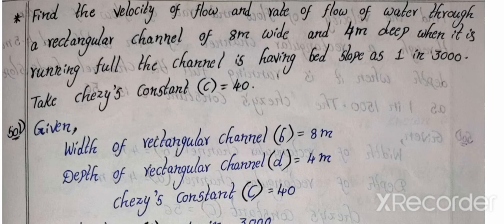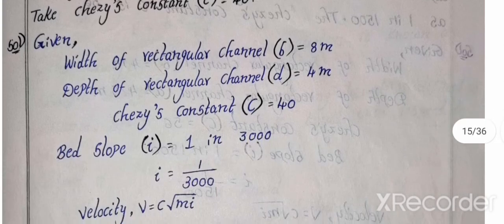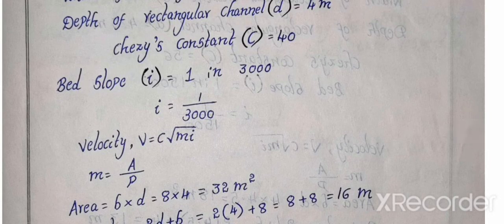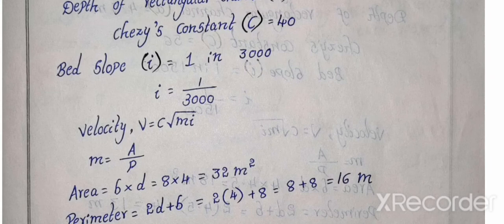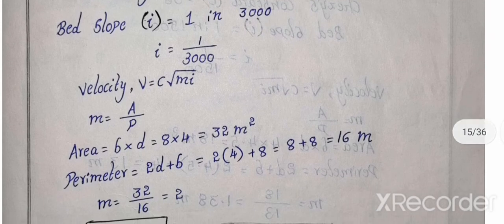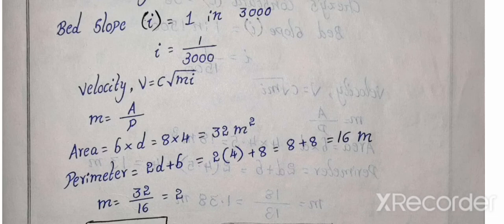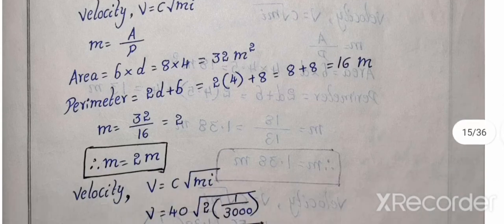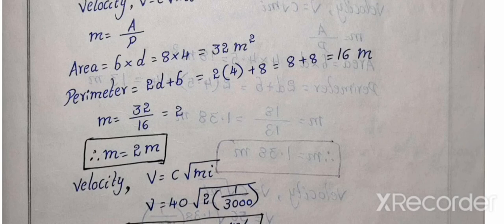When it is running full, the channel is having bed slope as 1 in 3000. So slope i equal to 1 in 3000. Take Chezy's constant C 40. Data: width 8 meters, depth 4 meters, constant C 40, i 1 in 3000. Velocity calculation, velocity equal to C root Mi. So see they have given, M value calculation, A by P. A is B into D. B value 8, D value 4, 32 meters square. Perimeter value is 2D plus B, 2 into D 4 meters plus B width 8 meters, 8 plus 8, 16 meters. So M value 32 by 16 equal to 2.